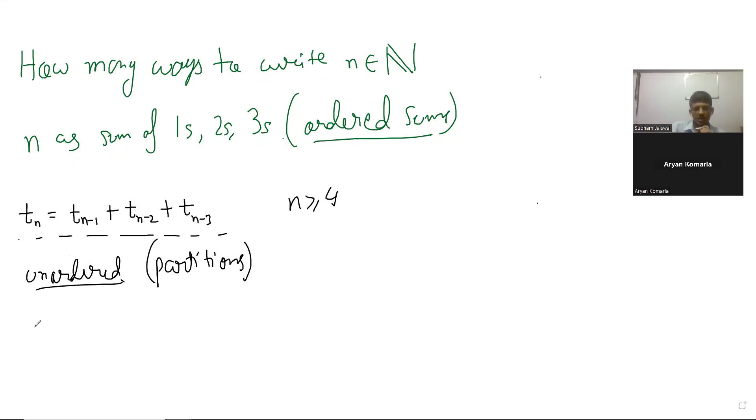You can ask: how many ones, how many twos, and how many threes? You're looking for solutions to k + 2a + 3b = n, where k, a, and b represent the number of ones, twos, and threes respectively.